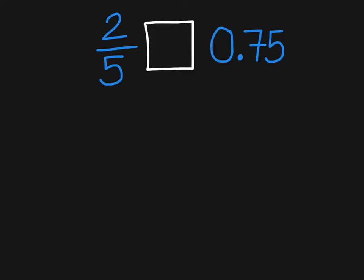Our first problem, we have the fraction 2 fifths, a weird looking box in the middle, and the decimal 75 hundredths. Our job is to compare this fraction to this decimal. And so in this box in the middle, we are going to have to put whether it is less than, greater than, or equals to.